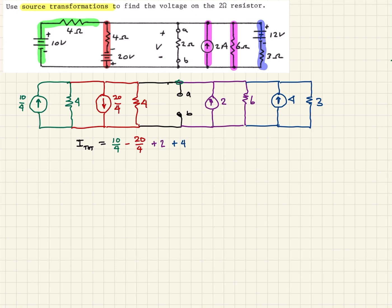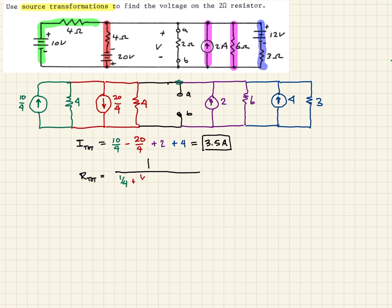Adding those up algebraically, we get 3.5 amps total. Next we need the total resistance. We just have four resistors in parallel, so we combine them using the parallel resistance law: 1/4 plus 1/4 plus 1/6 plus 1/3. The colors correspond to the resistors shown above. Adding those up gives 1 over 1, so the total resistance is 1 ohm.